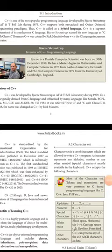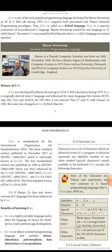Hello students, in this class we can learn about the history of C++. As we learned in the last class, who was the developer of C++? Bjarne Stroustrup, right. So Bjarne Stroustrup is the developer of C++, in the year 1979, in Bell Laboratory.